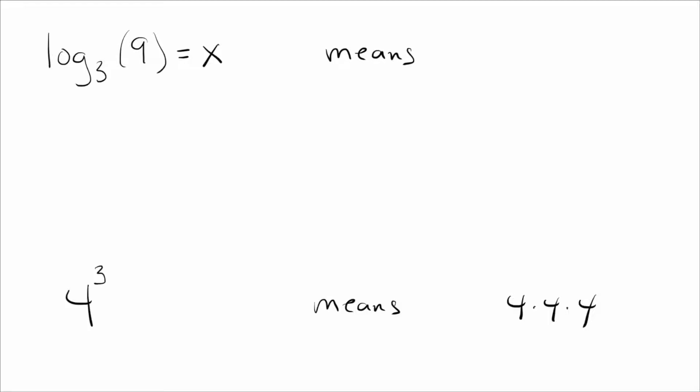Well, what it means is 3 to the power of x equals 9. And then once you've got that written, all you need to do is figure out, okay, 3 to what power equals 9? And of course, the answer is 2. 3 to the second power equals 9.